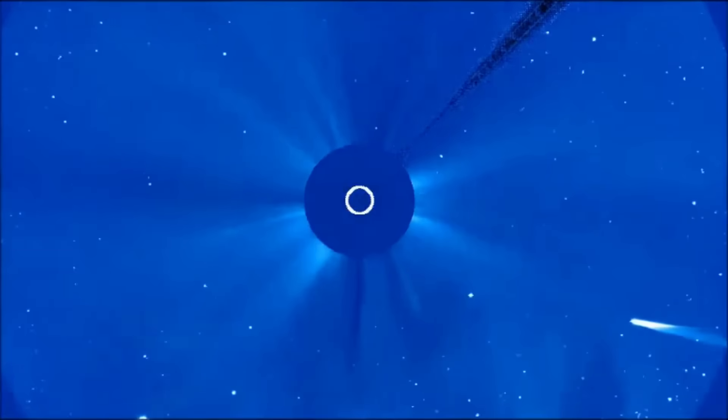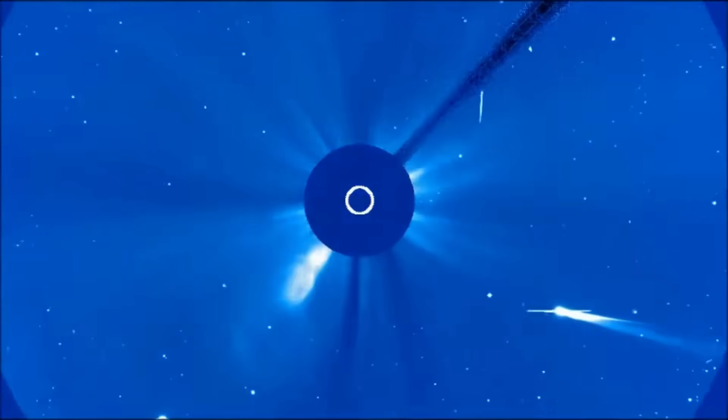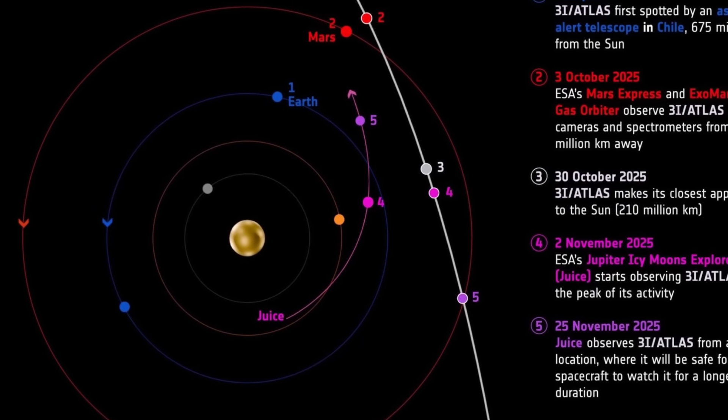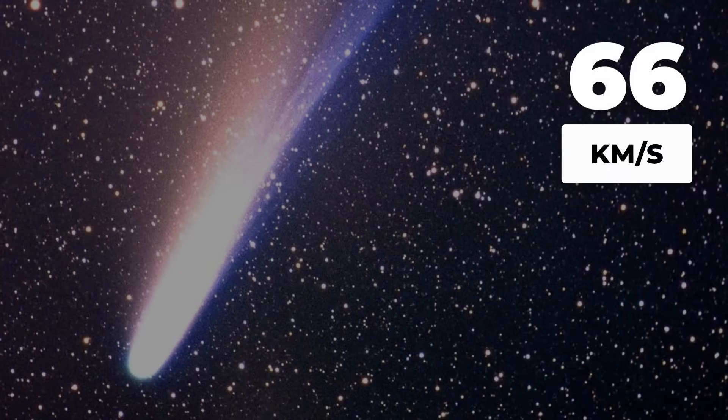3i-Atlas is getting too close to the Sun. Right now, the third-ever confirmed interstellar object is racing through the inner solar system, crossing inside Mars' orbit and surging toward its perihelion at nearly 68 kilometers per second.